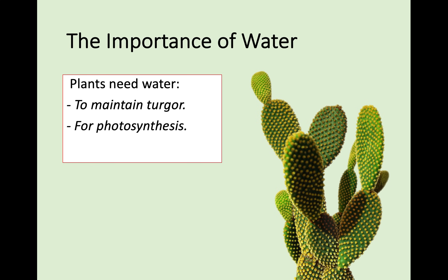The second use is that water is needed for photosynthesis. You should remember that water is a really important part of stage 1 during photolysis, where the water gets split into hydrogen and oxygen. That hydrogen is required for stage 2, and the oxygen goes away.